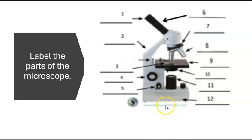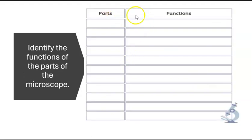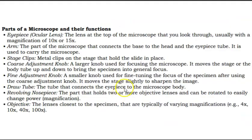After identifying the microscope parts, you were also able to identify the functions of the different parts. Starting with the eyepiece or ocular lens, it's the lens at the top of the microscope that you look through, usually with a magnification of 10 times or 15 times. The arm is the part of the microscope that connects the base to the head and the eyepiece tube. It is used to carry the microscope. Stage clips are metal clips on the stage that hold the slide in place.